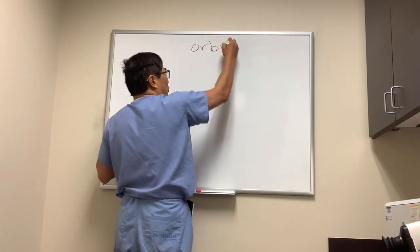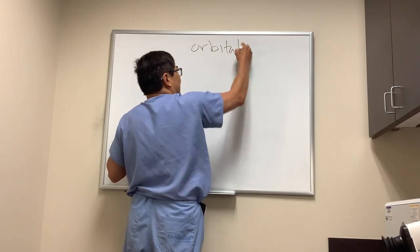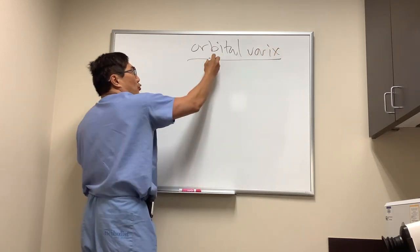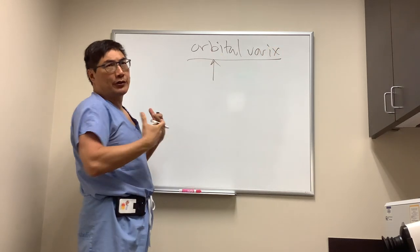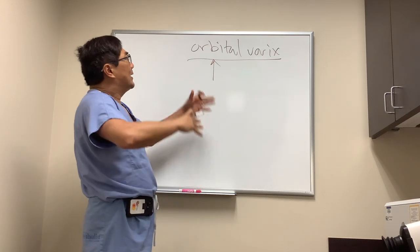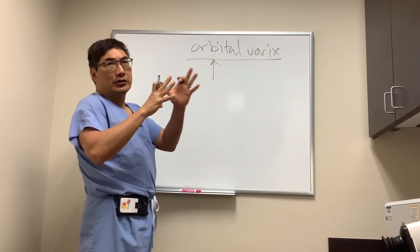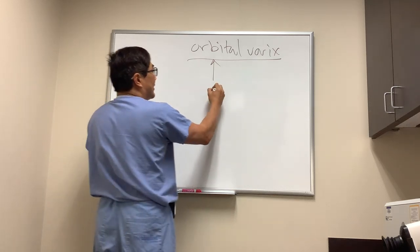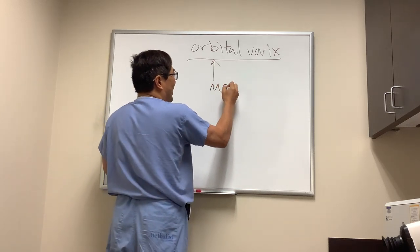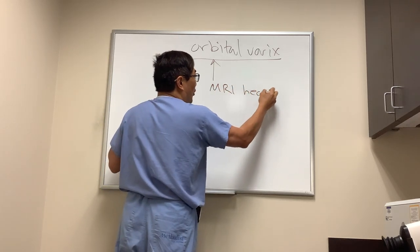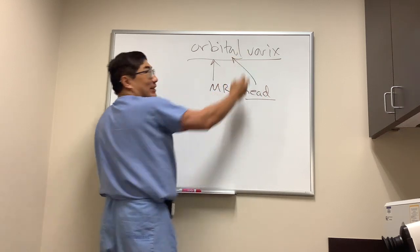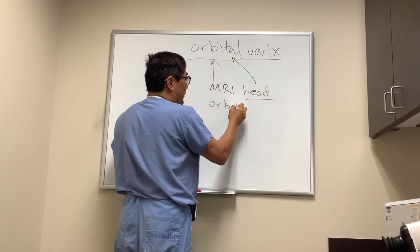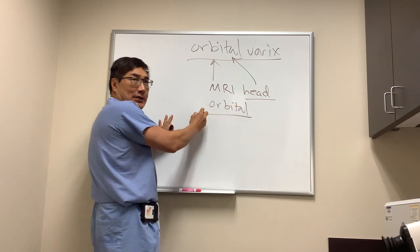Today we're going to be talking about orbital varices and how they come to neuro-ophthalmology. Normally this is an orbit case, but sometimes it ends up with neuro-ophthalmology because patients have very strange symptoms, and also because the neuroimaging is normally normal. The reason the MRI of the head is normal is because the orbit wasn't imaged. So if someone has orbital symptoms, we really need to have orbital imaging.